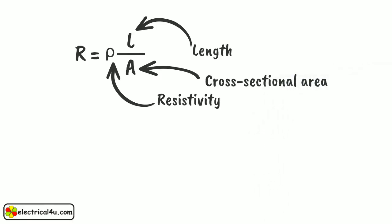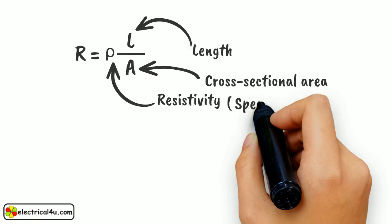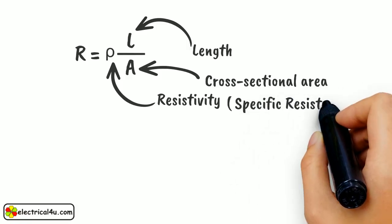The resistivity, rho, is also called the specific resistance of the material.